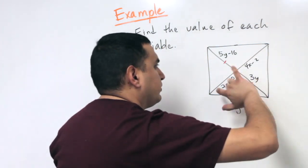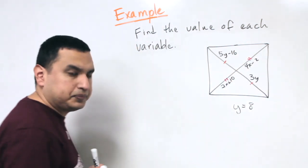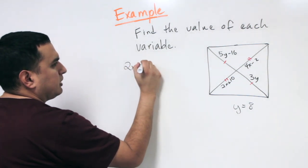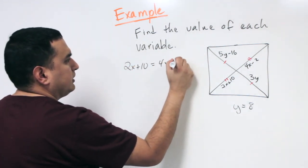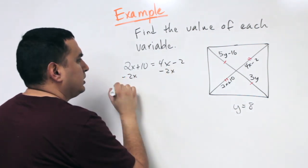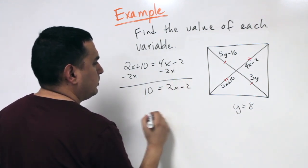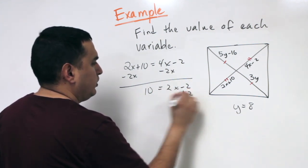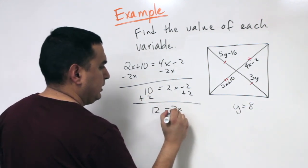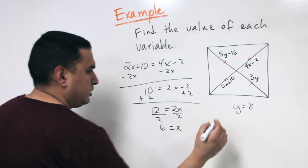On the opposite diagonal, for the X's, the same rule applies — the two halves are congruent. So 2X plus 10 equals 4X minus 2. Subtracting 2X from both sides gives 10 equals 2X minus 2. Adding 2 to both sides gives 12 equals 2X. Dividing by 2 gives X equals 6.